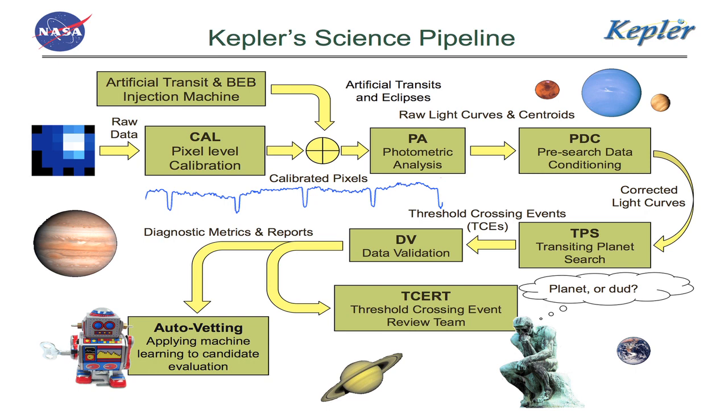We process that data to go from the raw pixels that come down from the spacecraft to all the archival data products and to the planet candidates, of which we've detected over 3,500 in the last four years.